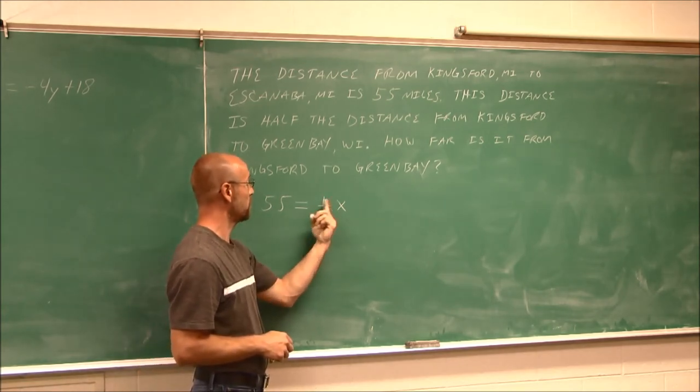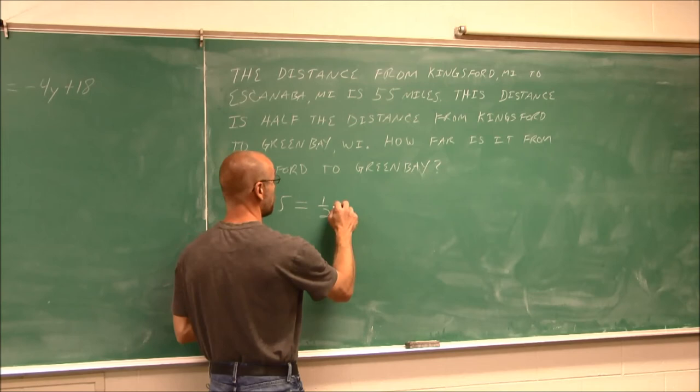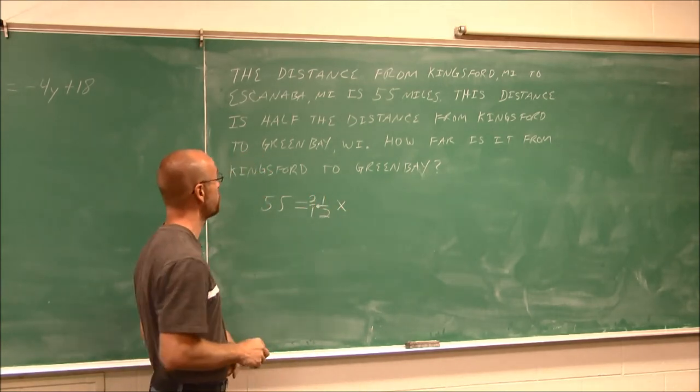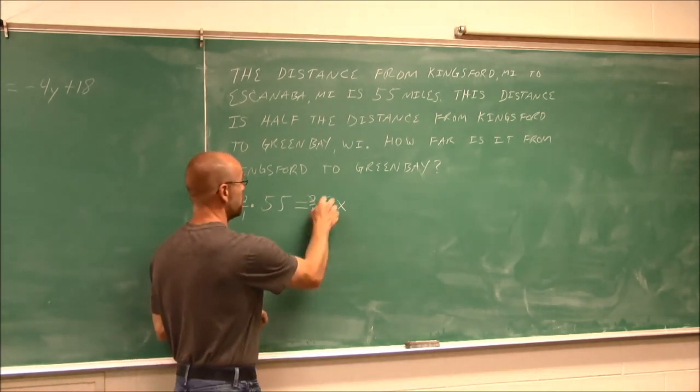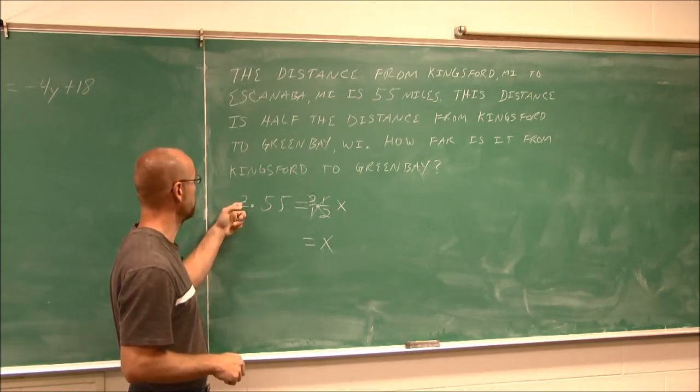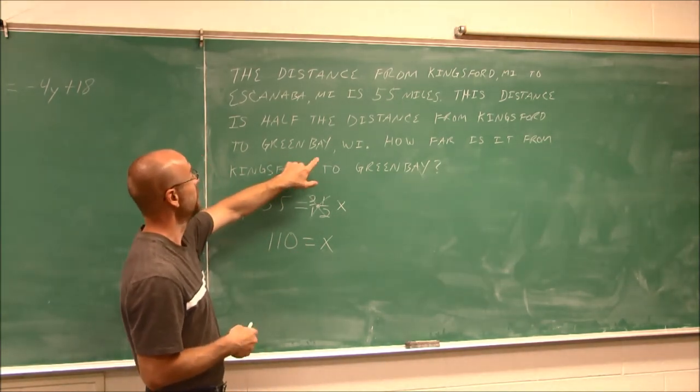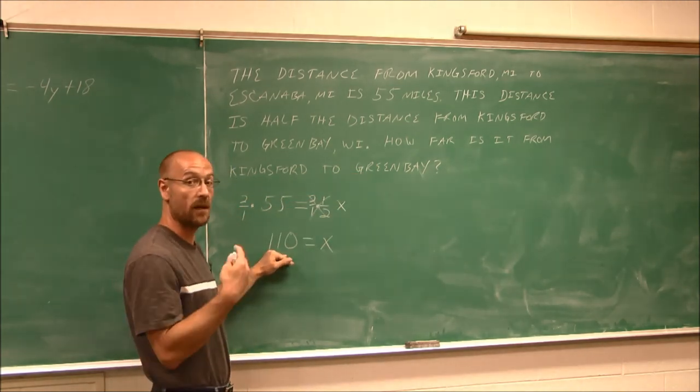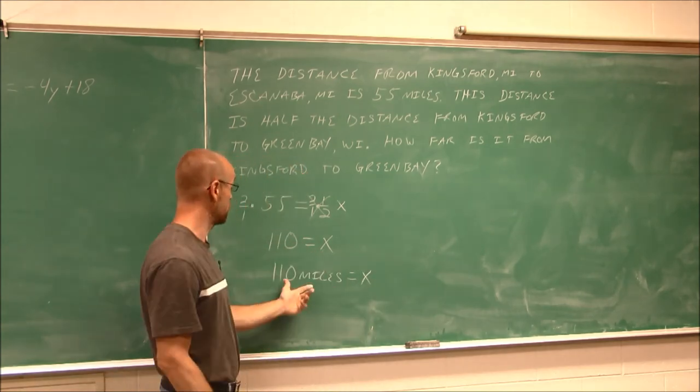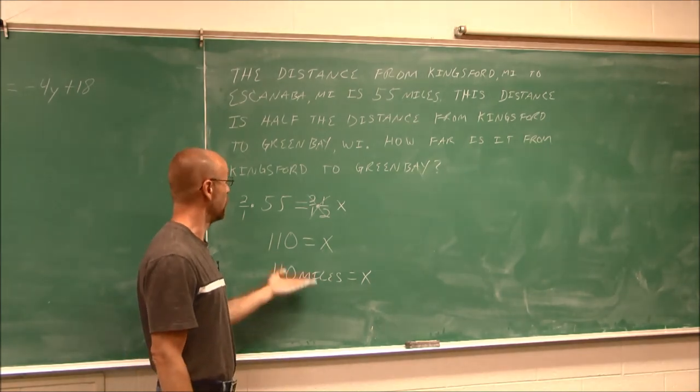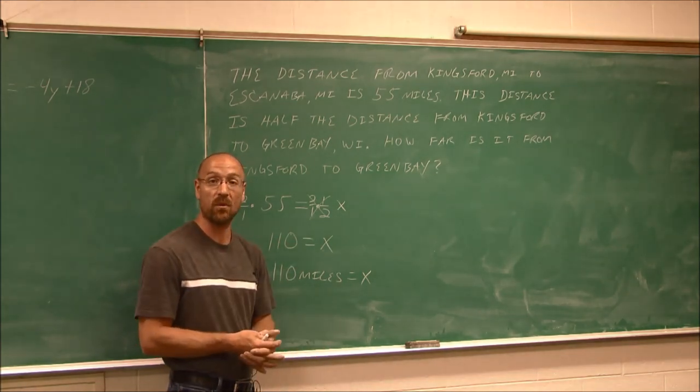So now I can solve this equation. And to solve this equation, I want to undo this multiplication of a fraction. So I would divide by the fraction. How do I divide by a fraction? I multiply, and I'll do it right here, by its reciprocal, the reciprocal of that. What I do to one side, I do to the other, which is going to be 2 over 1, which is just 2. So here, this reduces to 1. 1x is just x. 2 over 1 is just 2. 2 times 55 is 110. Now we reassess and reread the problem. It asks me, how far is it from Kingsford to Green Bay? 110? 110 what? It is 110 miles, because we always remember our units. So it's 110 miles from Kingsford, Michigan, to Green Bay, Wisconsin. So that's how we set them up, and that's how we solve them. And don't forget those units when working with application problems. So this has been section 5.3. Thank you for watching.